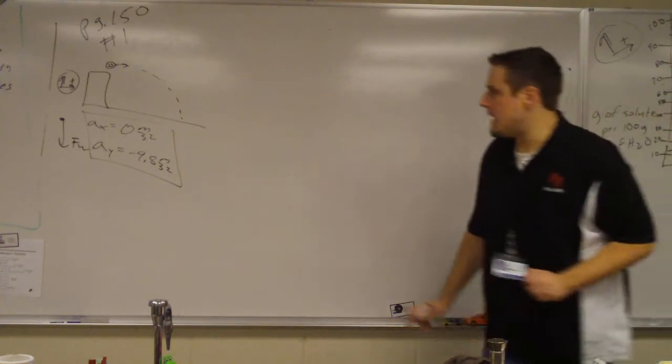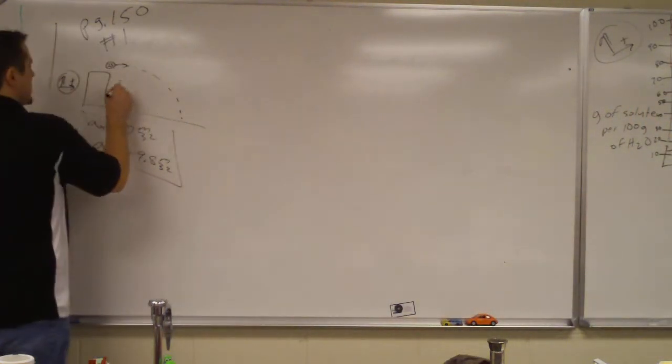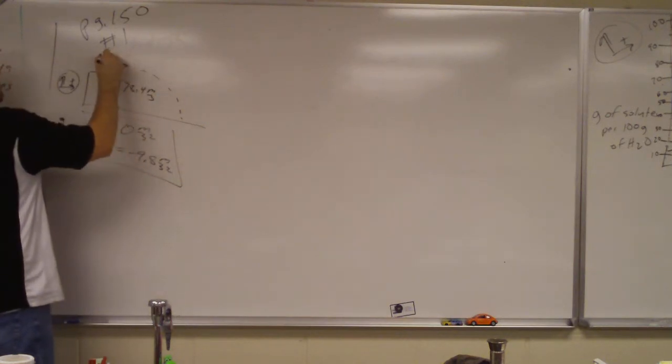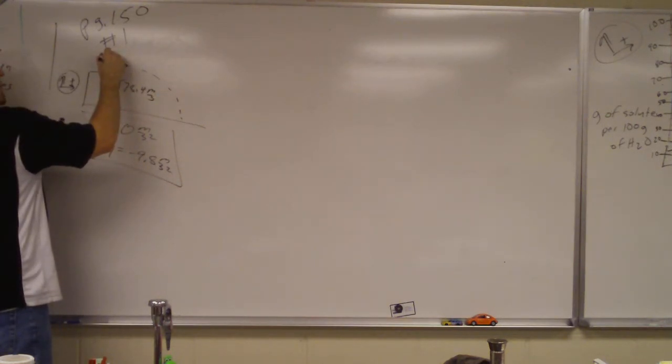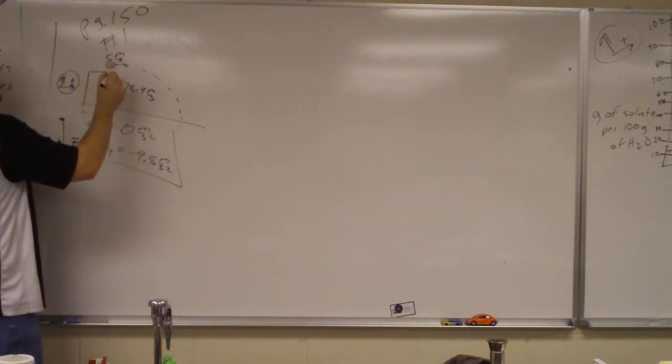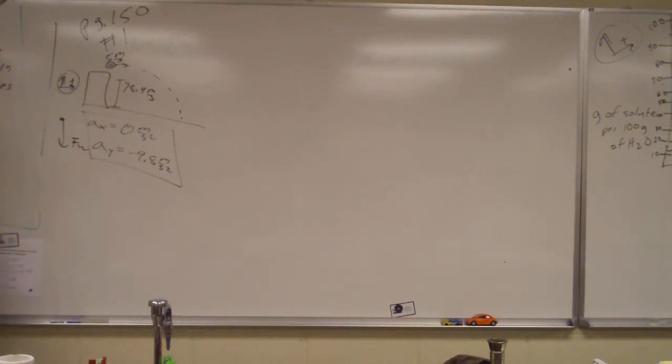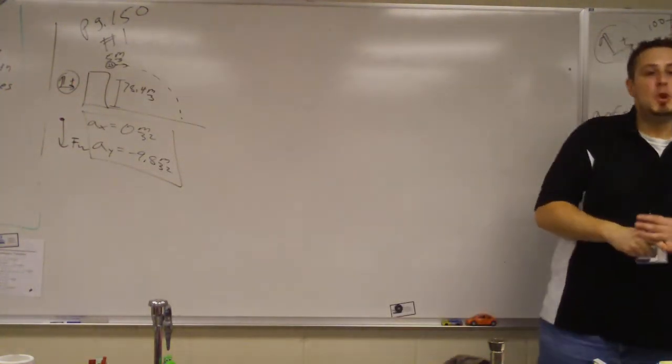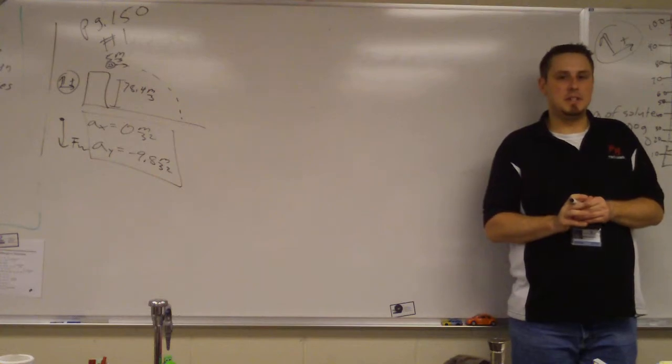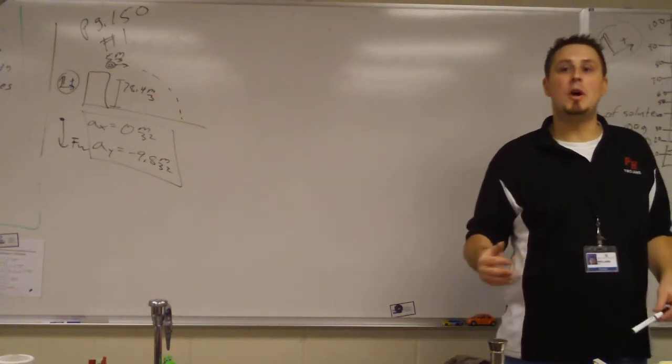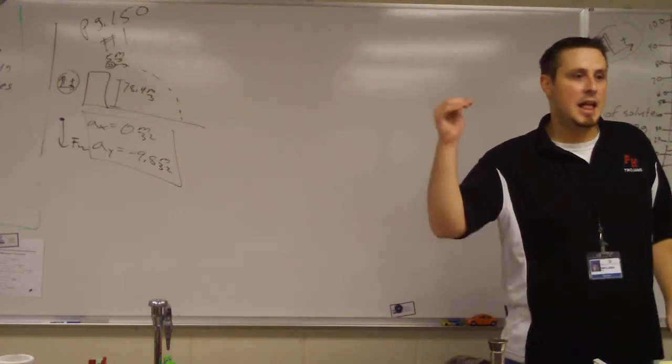And the cliff was 78.4 meters high. I'm just going to put that on here. And what speed was he thrown with? Five meters per second. Now it said it was thrown horizontally. So this is a case where do we need to calculate components? No. Because it was thrown horizontally, which means it was thrown in what direction initially? The x.